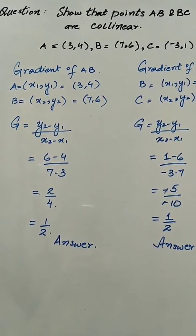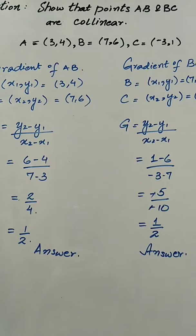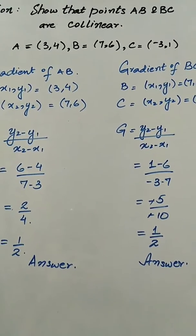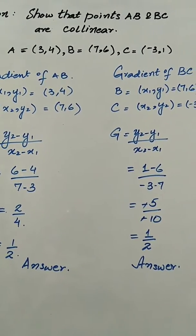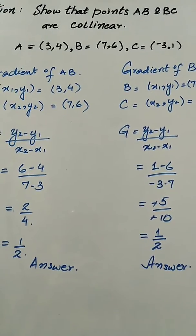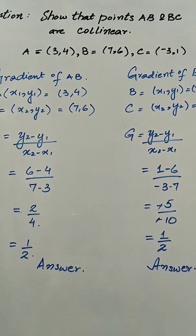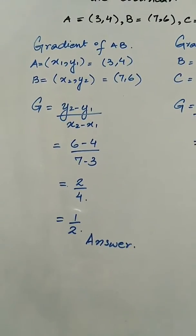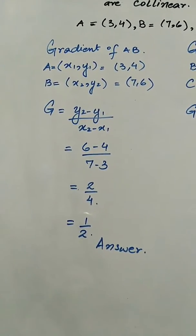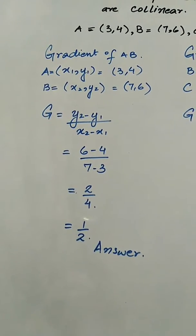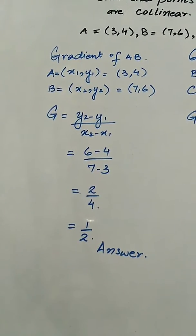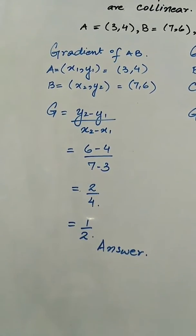Now look at the question in which we have to show that the points A, B and B, C are collinear. The coordinates of these points are given as A = (3, 4), B = (7, 6), and C = (-3, 1). In order to prove this, we will find out the gradient of both line segments AB and BC. The gradient of AB: A is x1, y1 = (3, 4) and B is x2, y2 = (7, 6). So gradient = (6 - 4) / (7 - 3) = 2/4 = 1/2.